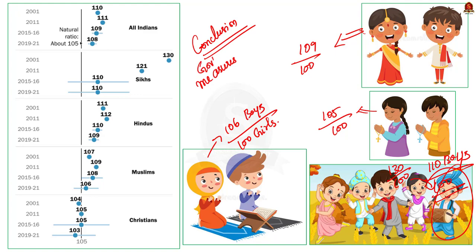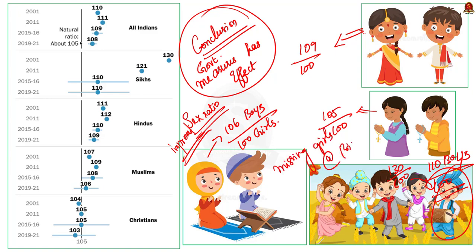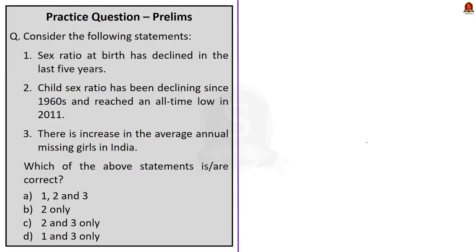So that's all about this news article. We covered the basics of sex ratio, measures taken to improve it, and the missing girls at birth concept. All these points can be directly used in your mains answer writing to enhance your answers. Now let's move on to the next news article discussion.